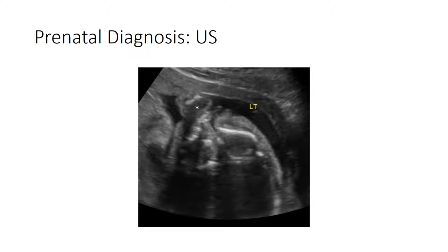Here is an axial ultrasound image of a fetus at 22 weeks of gestation showing evidence of a bilateral cleft lip with a protrusive premaxillary segment. The premaxillary segment can sometimes look like an echogenic mass and would carry a differential, but with images in different planes you can identify this as a bilateral cleft lip. You can also note two echogenic foci within the premaxillary segment, which are developing tooth buds.